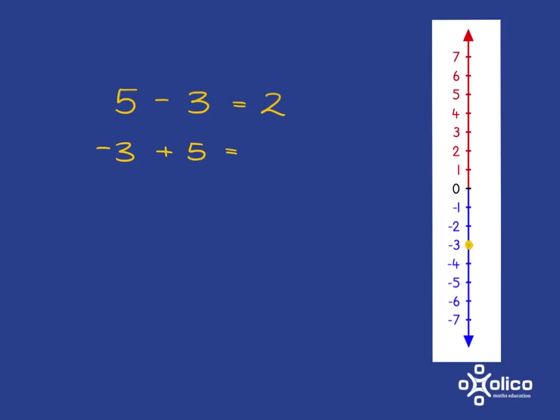Well, here you're starting at negative 3, you're adding, so you're going up, and you're going to go up 5 steps, so you're going to end up here at 2. So you see you're getting the same answer.